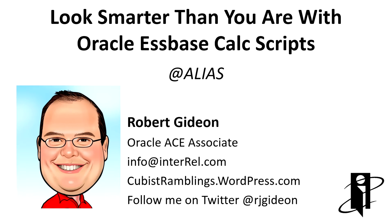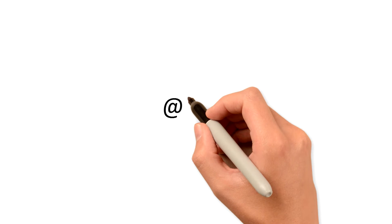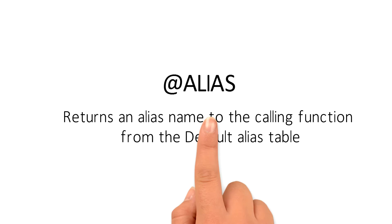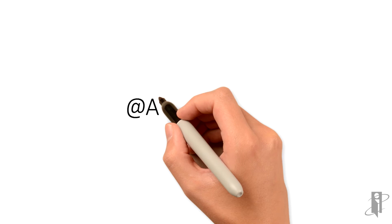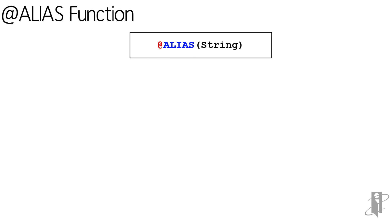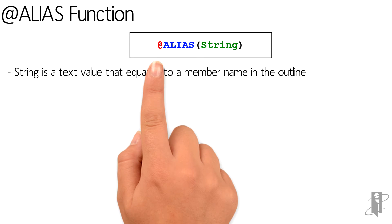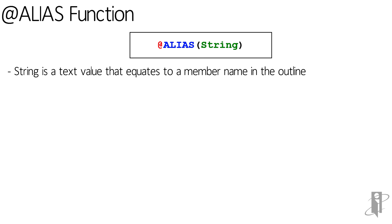Welcome to Look Smarter Than You Are with Essbase Calc Scripts — the alias function. The alias function returns an alias name to the calling function from the default alias table. To use the alias function, we enter alias followed by a string parameter. The string parameter is a text value that equates to a member name in the outline.